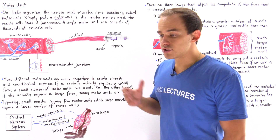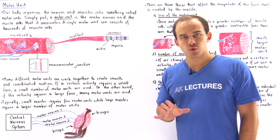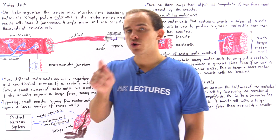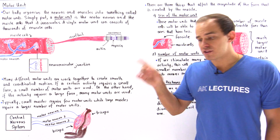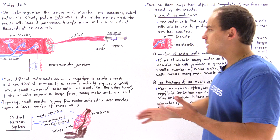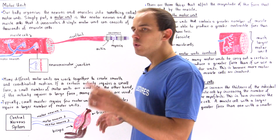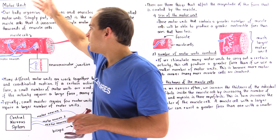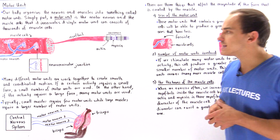The human body organizes neurons and muscles into units we call motor units. Simply put, a motor unit consists of the motor neuron as well as all the muscle cells that that particular motor neuron innervates. To see what we mean, let's take a look at the following diagram. We have a single muscle cell, also known as the muscle fiber or the myocyte.